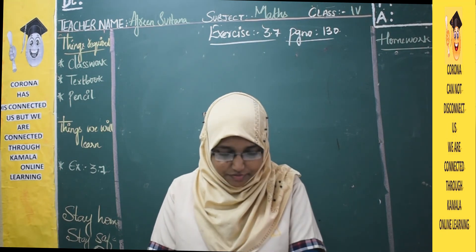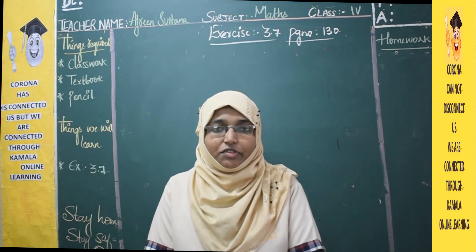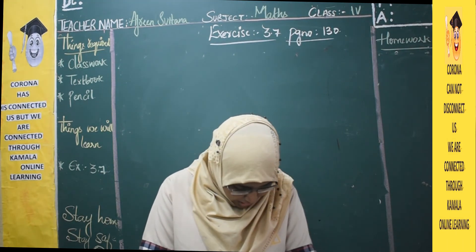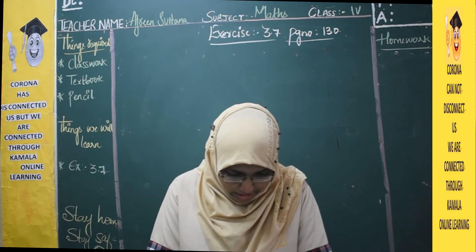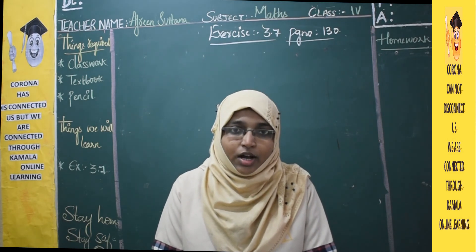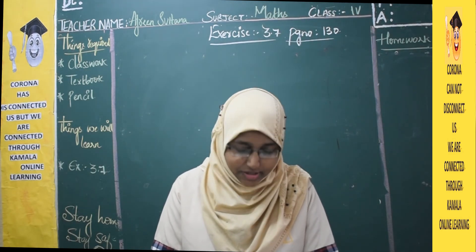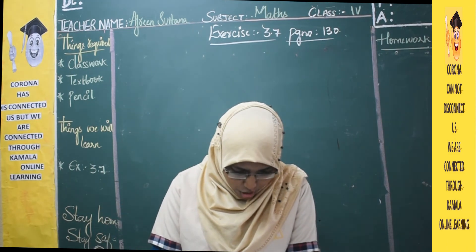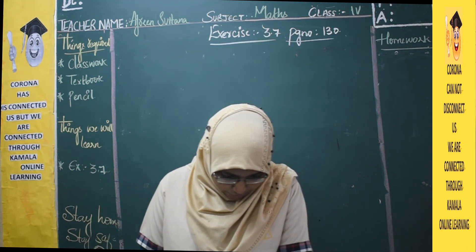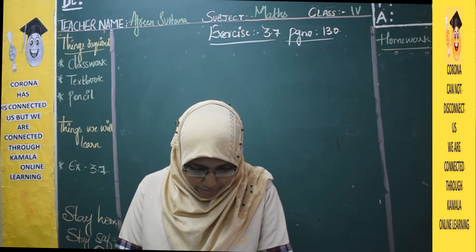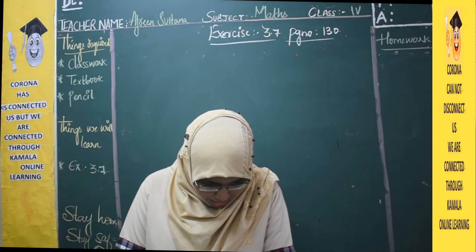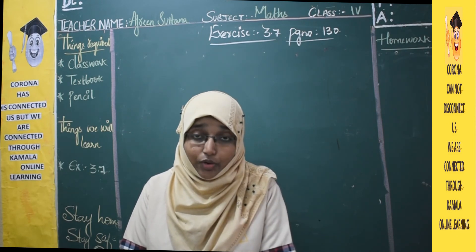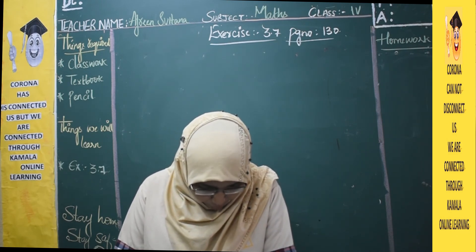Let us go with the first one. I request everyone to please open your classwork, textbook, and pencil. Open page number 130 and copy down question number 1 from exercise 3.7. I will read the question for you. Shushma placed an order for 15,775 flowers for decorating a party hall. There were 9,455 yellow flowers and the rest were white.